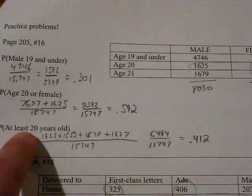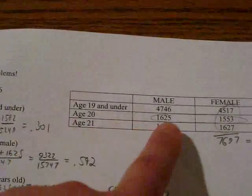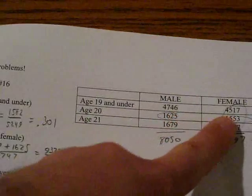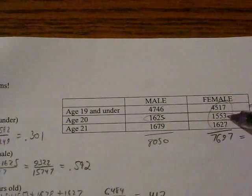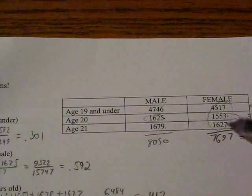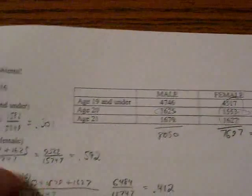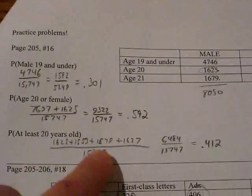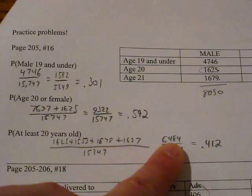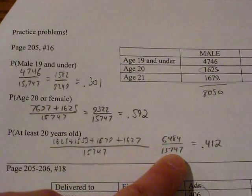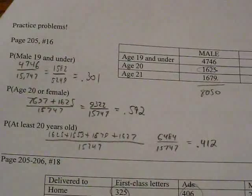What is the probability of being at least 20 years old? Okay, well we want to be at least 20 years old so basically I'm adding up these four sections here: the 1,625, 1,553, 1,679, and the 1,627. I'm adding up all of those. I've shown that here on the video. And I get a total of 6,484 divided by 15,747 which is approximately 41% or 0.412.